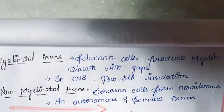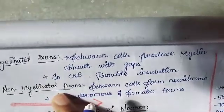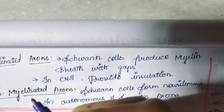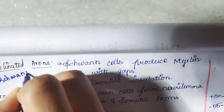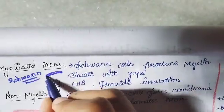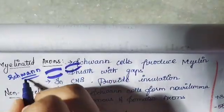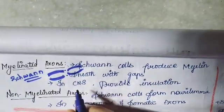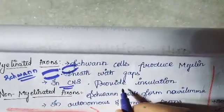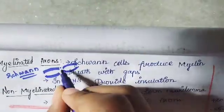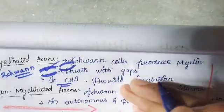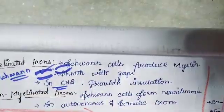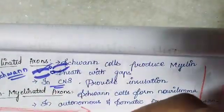The axons vary as myelinated axons and non-myelinated axons. In myelinated axons, Schwann cells form a sheet over the axon — this is the myelin sheath, produced by Schwann cells with gaps between them. They are present in the central nervous system and provide insulation, acting as biological resistance for the axon. This means the axoplasm will not contact the extracellular fluid, only the nodes of Ranvier are exposed.